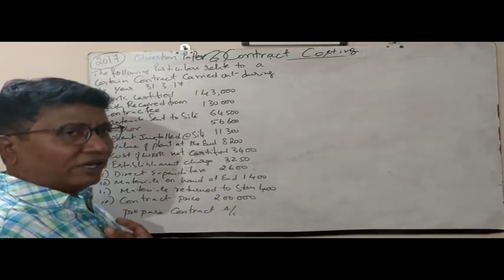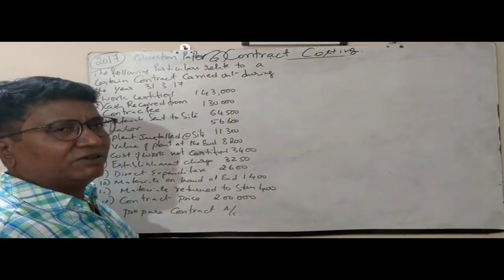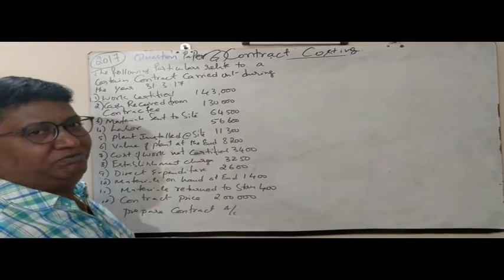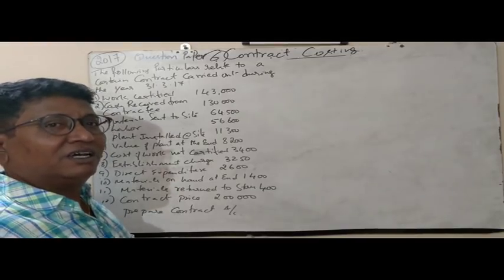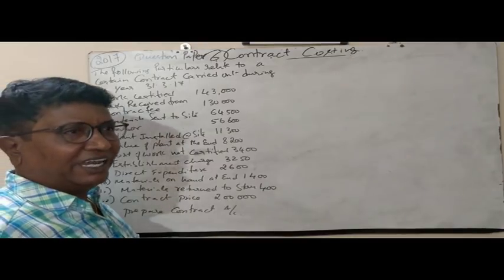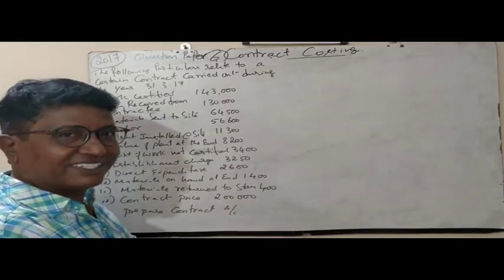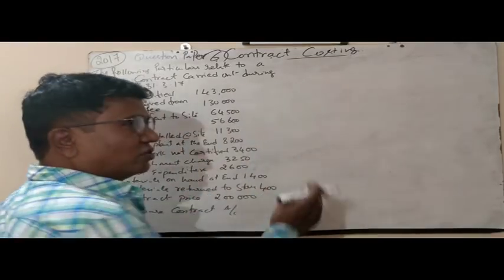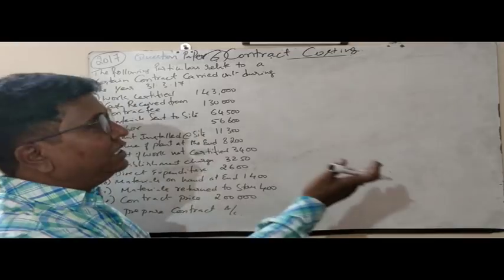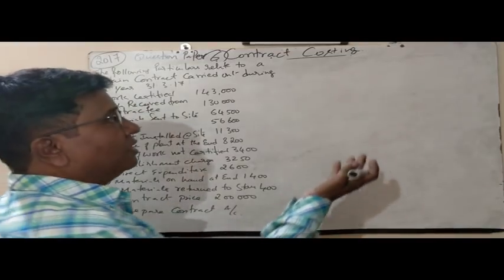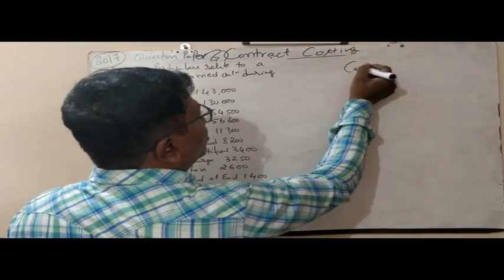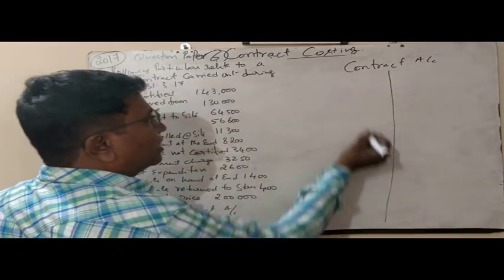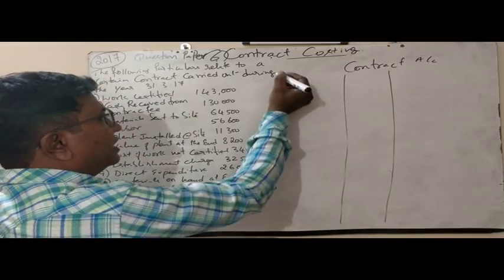Generally, the expenses for a contractor in constructing a building are materials, labour, direct expenses, and some office or establishment expenses. When preparing a contract account, we read the question and solve the answer. In a contract account, we have debit and credit sides.